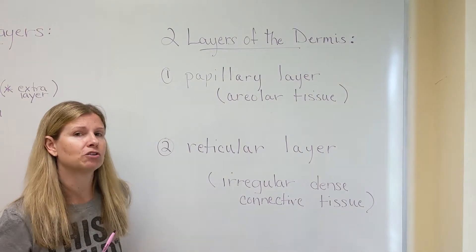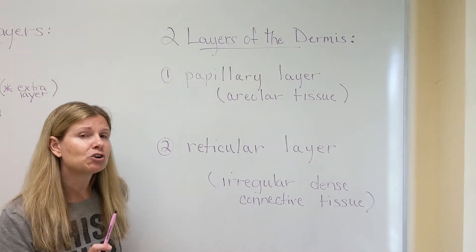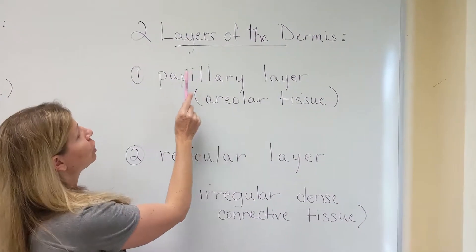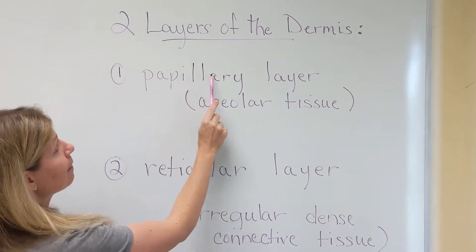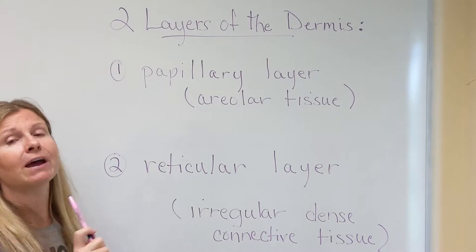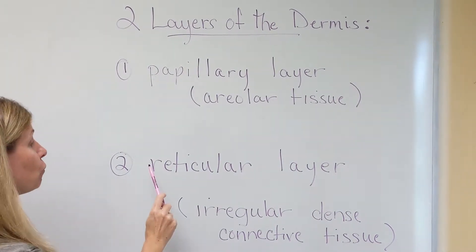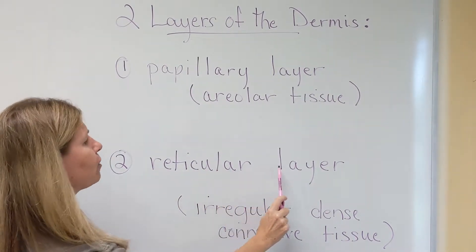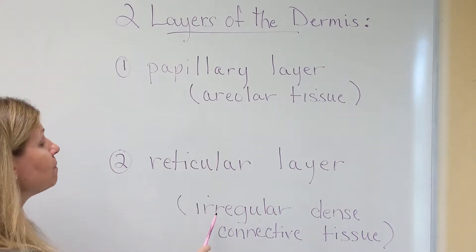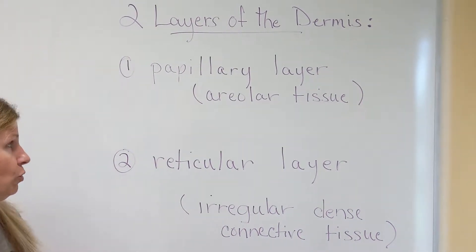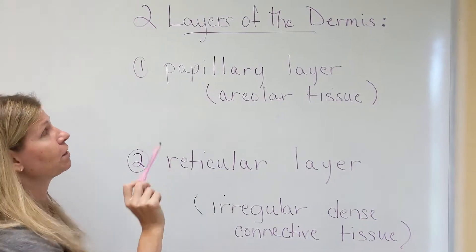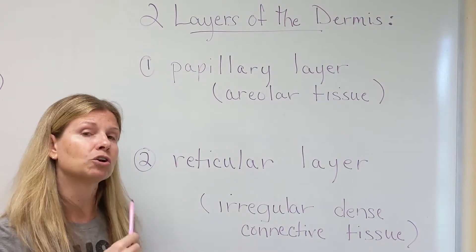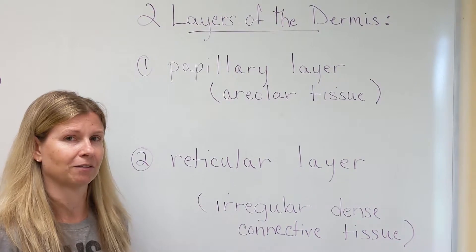Now the epidermis has four or five layers. The dermis has only two layers. We have the top papillary layer, made of areola tissue, followed by the reticular layer right underneath, which is made of irregular dense connective tissue. Those are the two layers that make up the dermis. We're going to zoom in now on the model to look at the structures you'll find in the dermis.